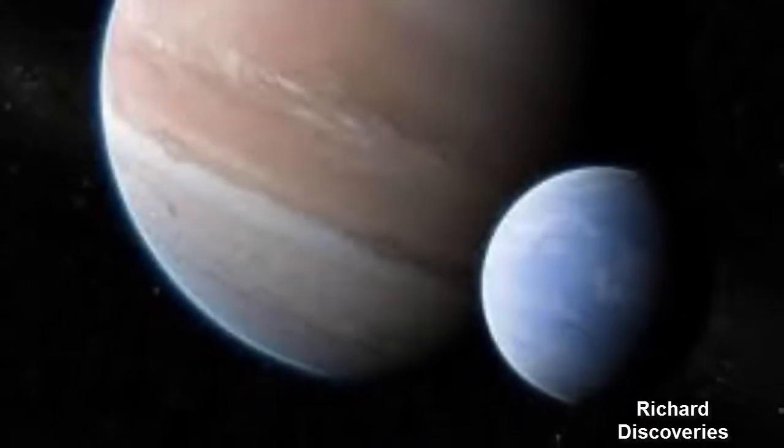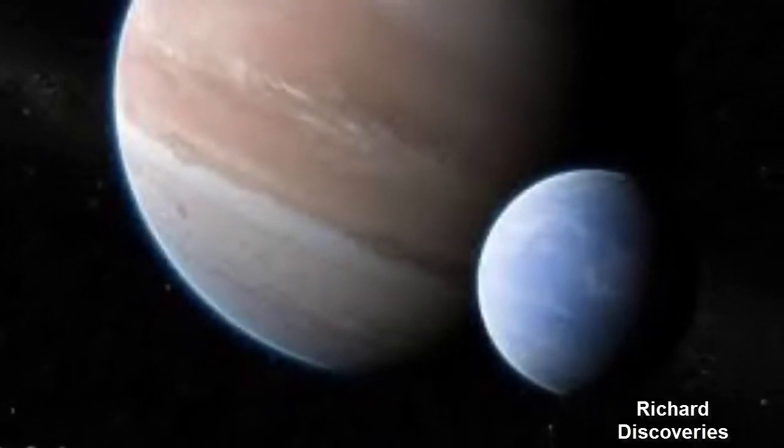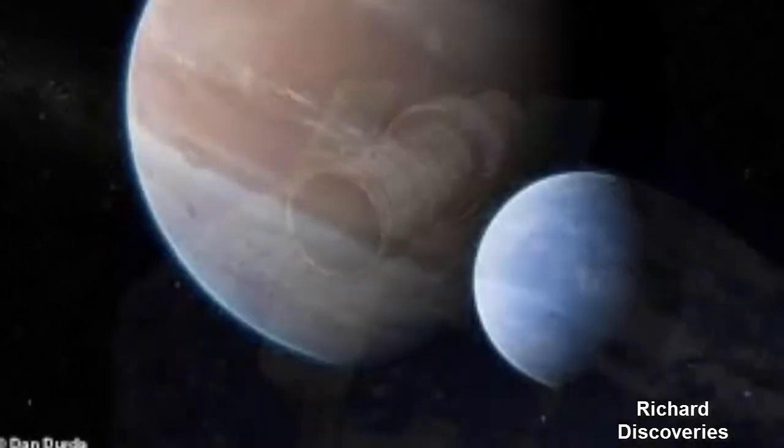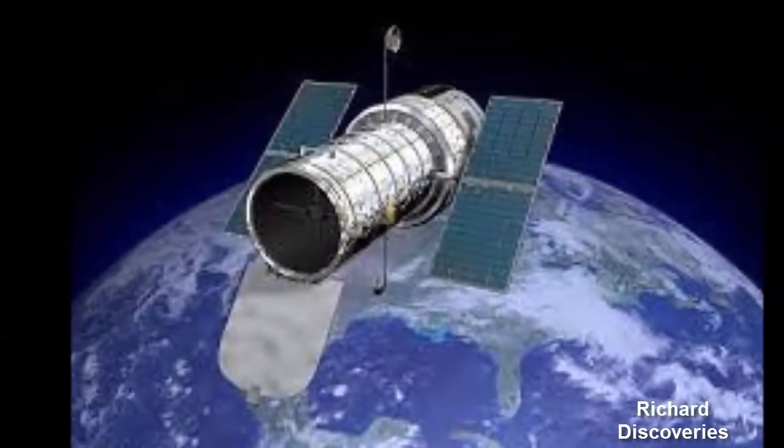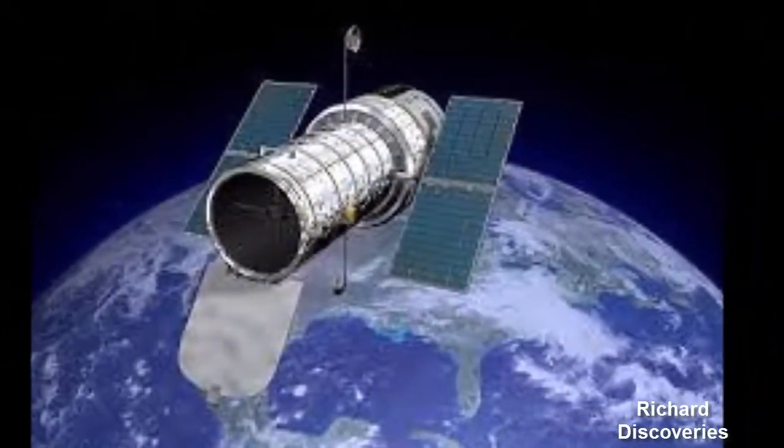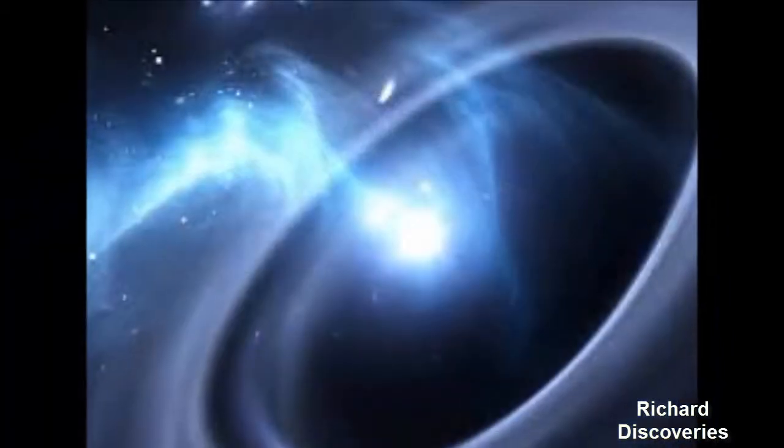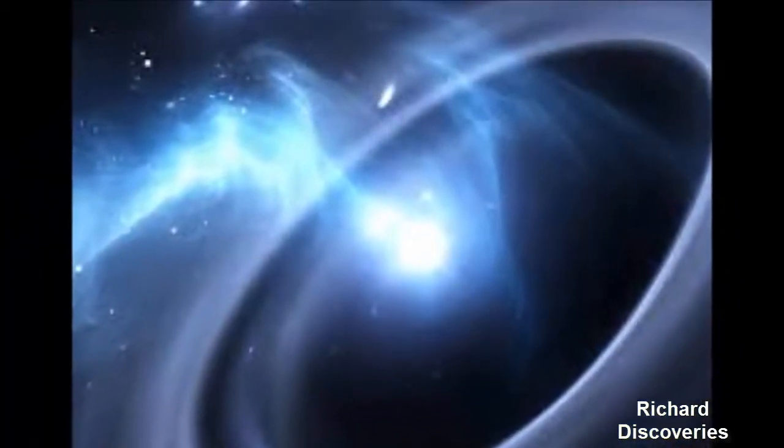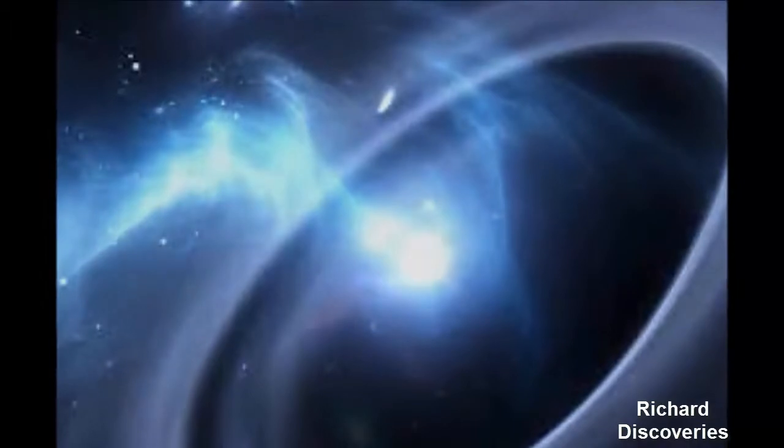Major breakthrough: moon 8,000 light years away spotted in a first for astronomy. Astronomers at Columbia University may have discovered the first ever exomoon, which is thought to be orbiting a planet system 8,000 light years away using NASA's Kepler and Hubble Space Telescopes.